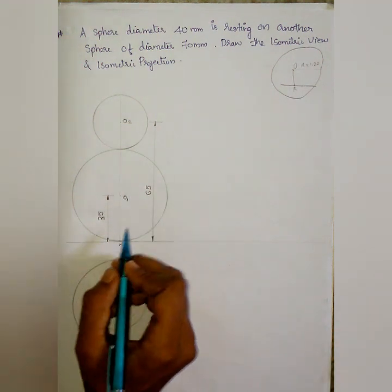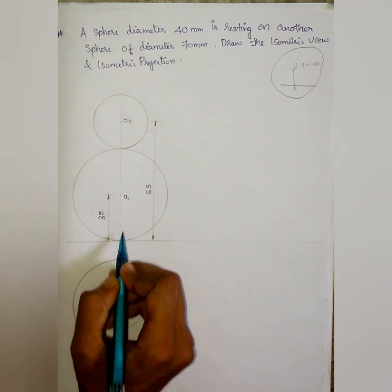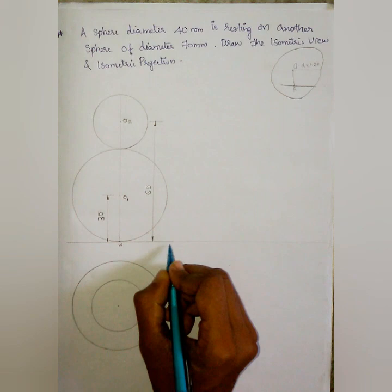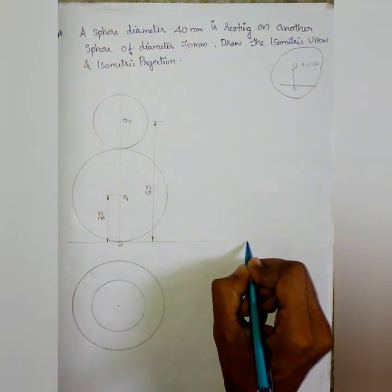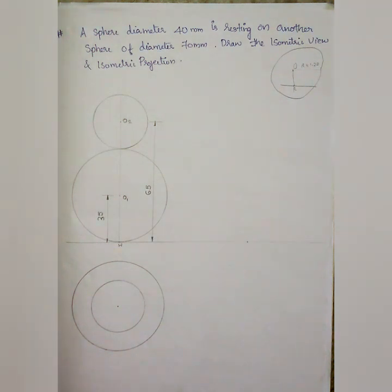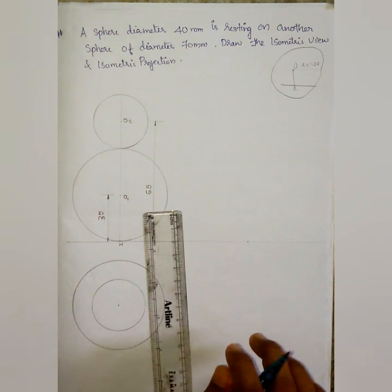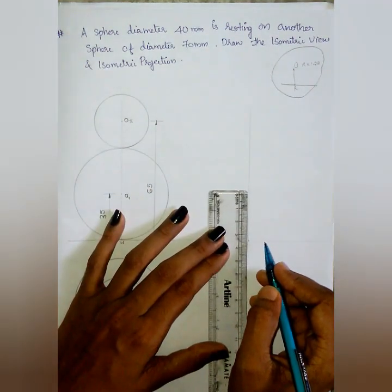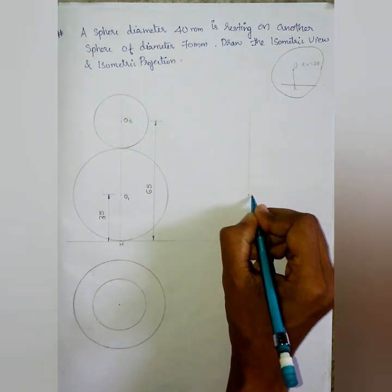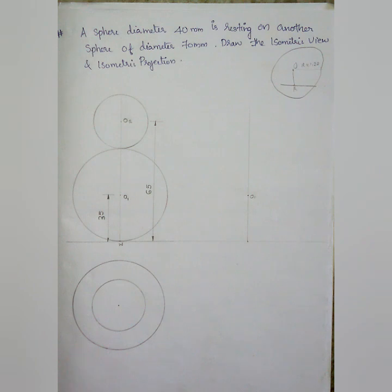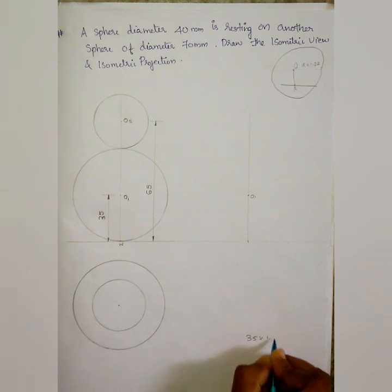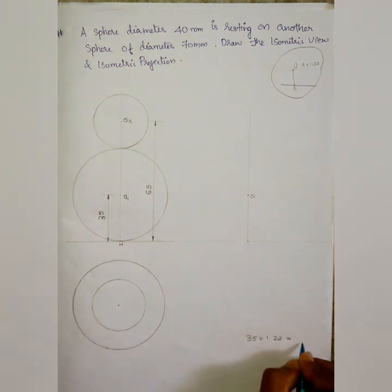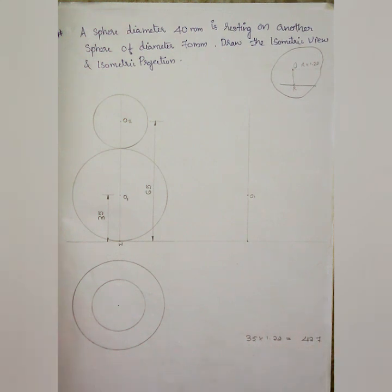The base circle center point is 35mm. The point is marked by R at the center point. Then we have the vertical line. The circle is marked by R into 1.22, which means 35 into 1.22, that equals 42.7.